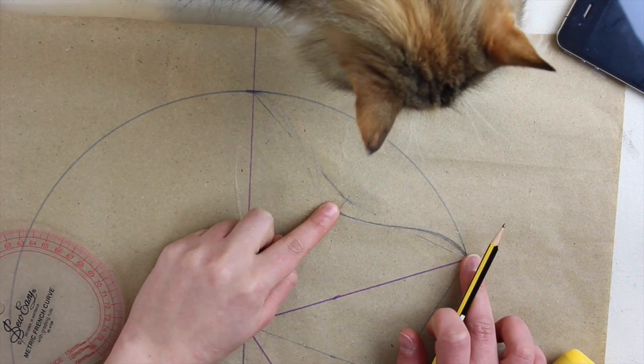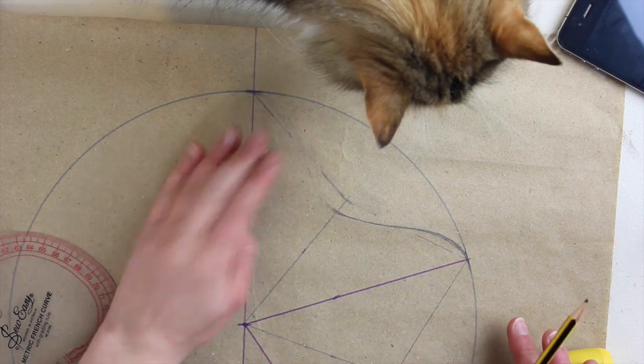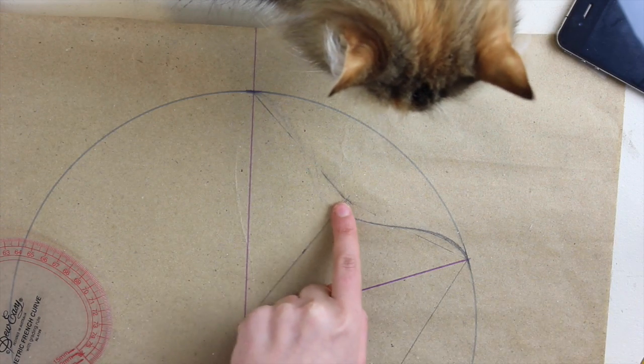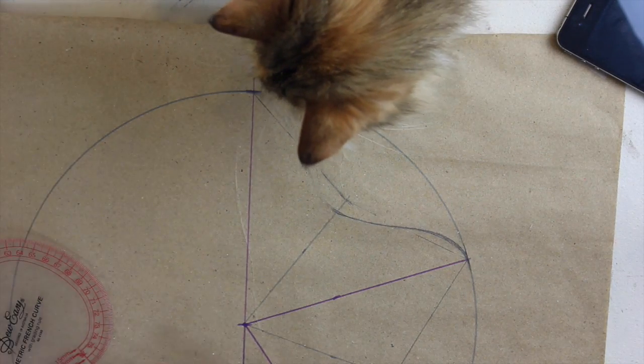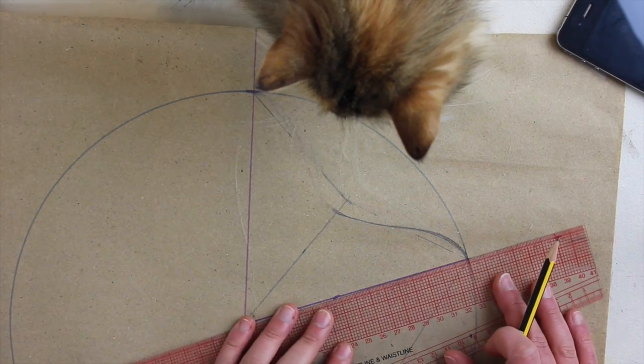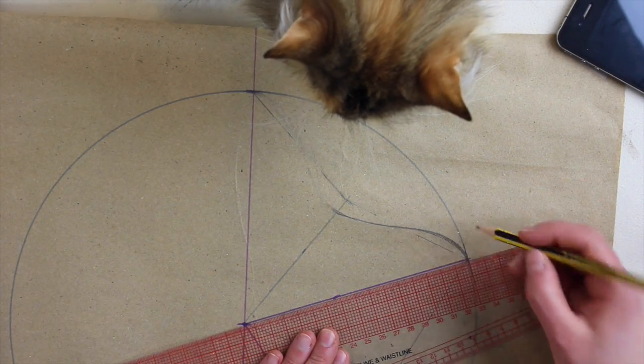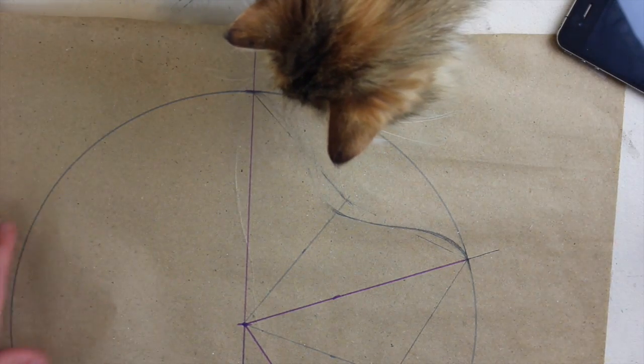Since everything is symmetrical, we are going to cut everything by folding things together and cutting through two layers of paper. So it's not a big problem. Now what I'm going to do is add seam allowance to this portion of my pattern. And that's all I'm going to work on. You're going to see later on how we're going to do it.